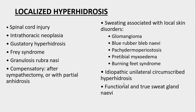Localized hyperhidrosis occurs in spinal cord injuries, intrathoracic neoplasms, as a result of gustatory hyperhidrosis, in Frey syndrome, in granulosis rubra nasi, compensatory after sympathectomy, and in association with local skin disorders like glomangioma, blue rubber bleb nevus, pachydermoperiostosis, pretibial myxedema, and burning feet syndrome. It may be idiopathic, unilateral, and circumscribed, and there may be functional and true sweat gland nevi.